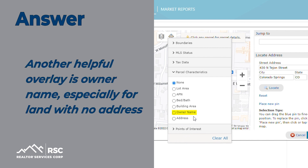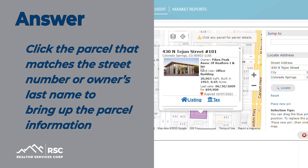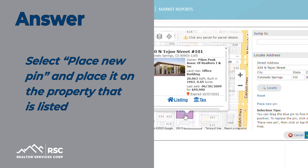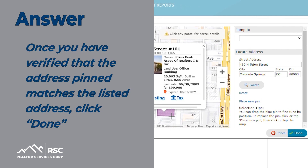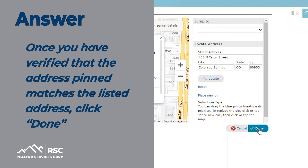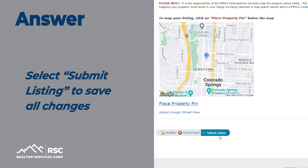Another helpful overlay is Owner Name, especially for land with no address. Click the parcel that matches the street number or owner's last name to bring up the parcel information. Select Place New PIN and place it on the property that is listed. Once you have verified that the address pinned matches the listed address, click Done. Select Submit Listing to save all changes.